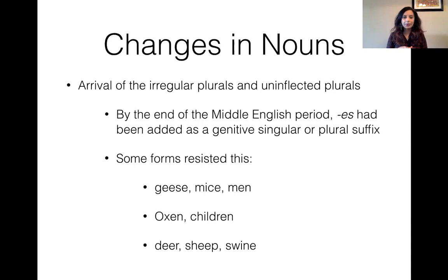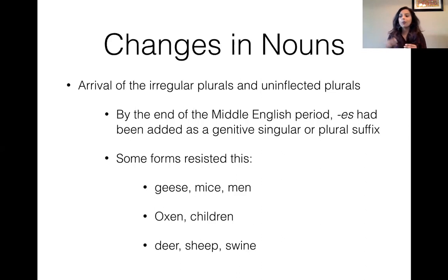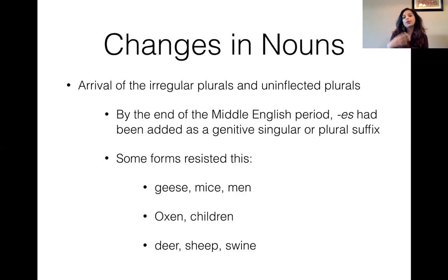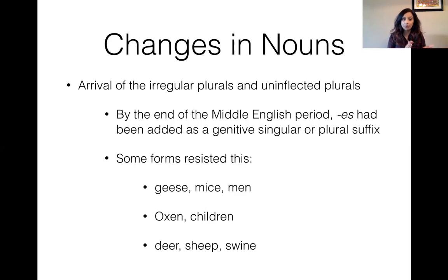Let's talk about changes in different domains of the language, starting with the nominal domain — the nouns. This is the first time we actually start to see regular versus irregular plural marking. By the end of the Middle English period you have the '-es' ending as a plural suffix, but many forms from Old English and Middle English resisted this. Words like 'geese', 'mice', 'men', 'oxen', 'children', etc., refused to take the '-es' ending and were classified as irregular morphology.